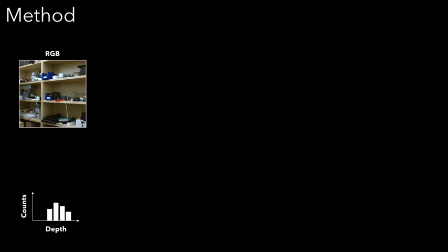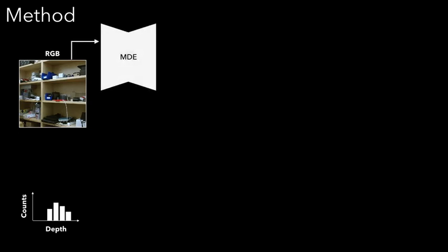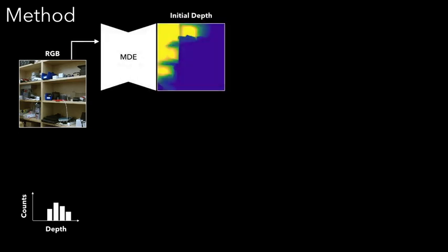To do this, we propose the following RGB-SPAD sensor fusion strategy. Beginning with a single RGB image and SPAD transient, we pass the RGB image through a monocular depth estimator to acquire an initial depth estimate.